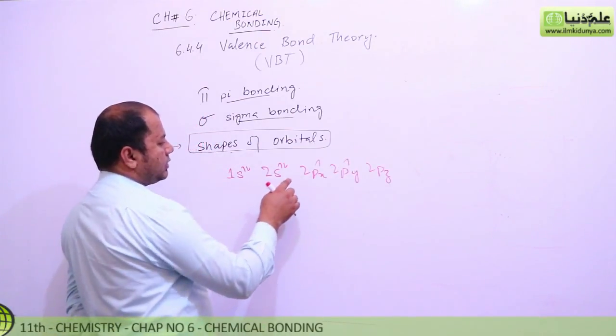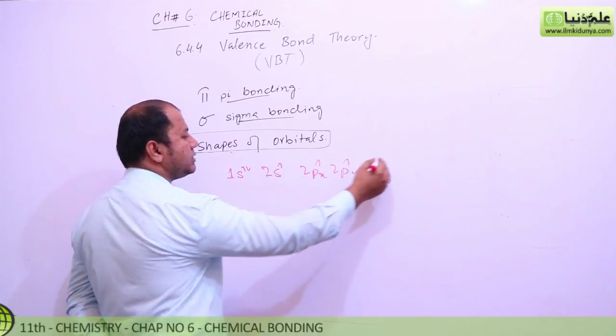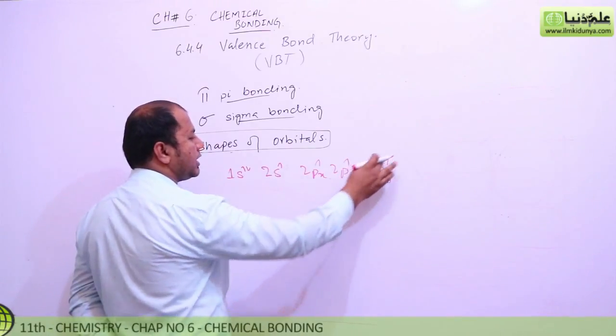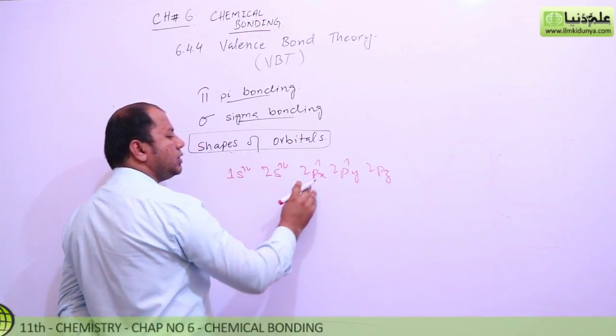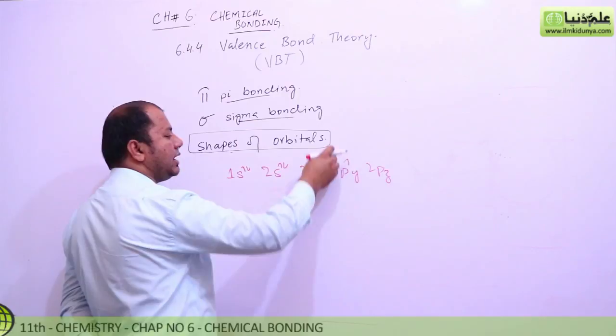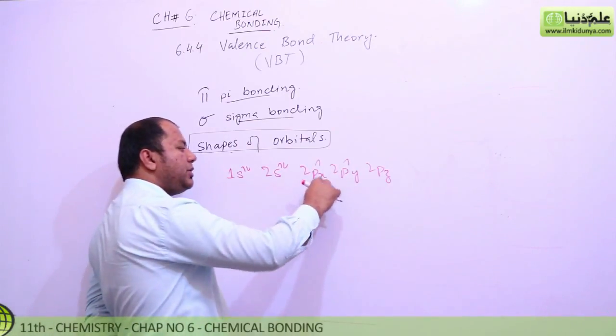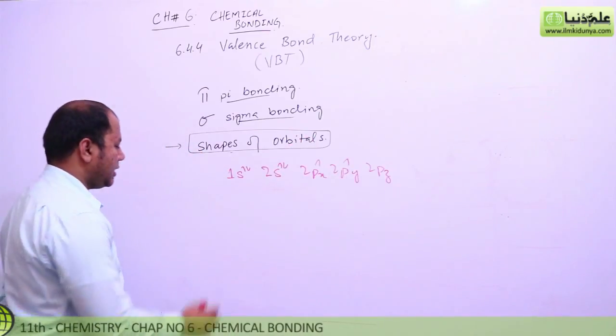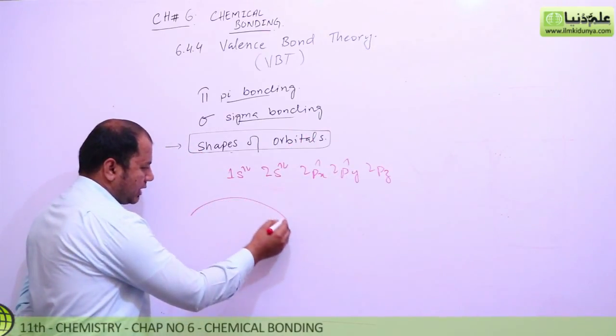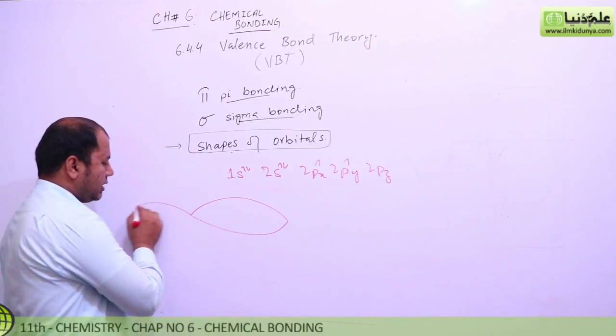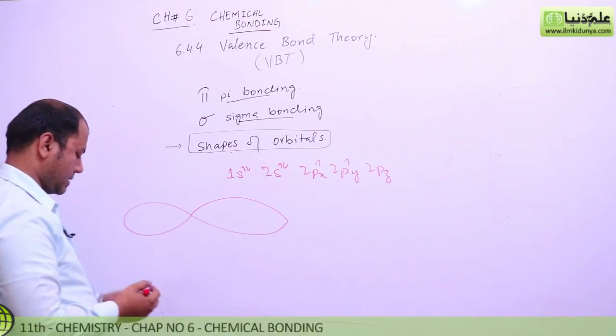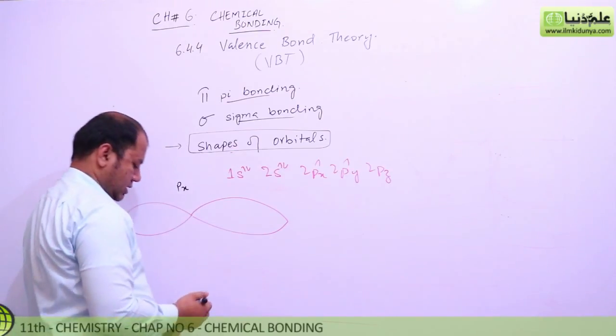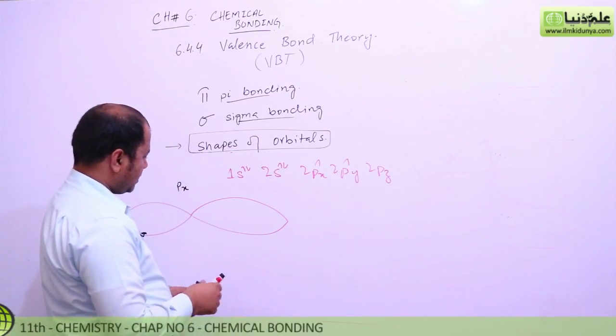Now one electron can jump here creating an excited state - this becomes SP3 hybrid, which I'll explain later. Since it's divalent with electrons filling here, the px and py orbitals have to overlap with other atoms to form bonds.